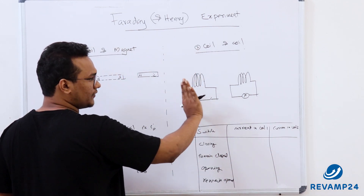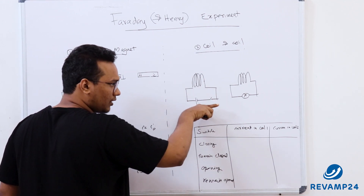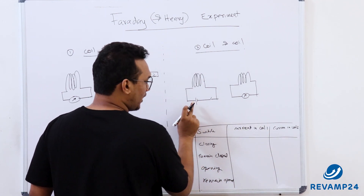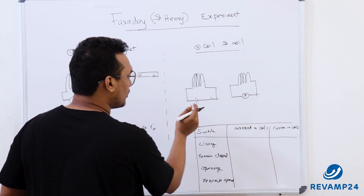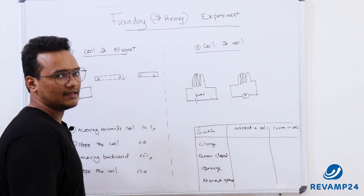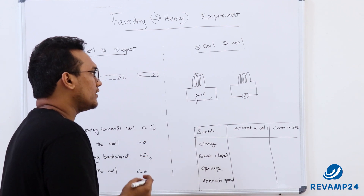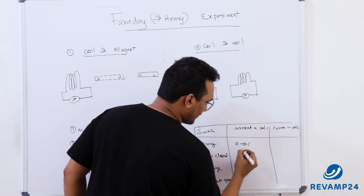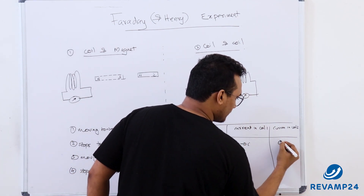Initially the switch was open. When he closed it, he immediately got a deflection in the second coil — current was induced. At the moment of closing, current in the first coil increased gradually from 0 to i. During that increase from 0 to i, he measured a deflection.